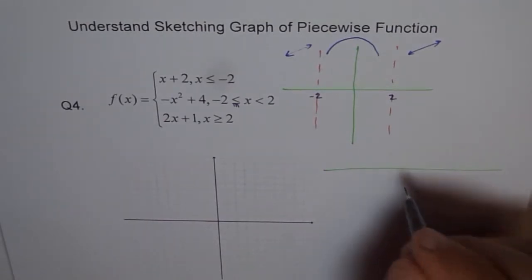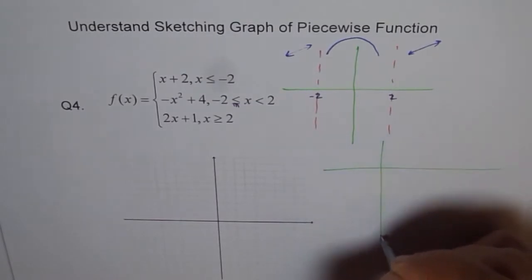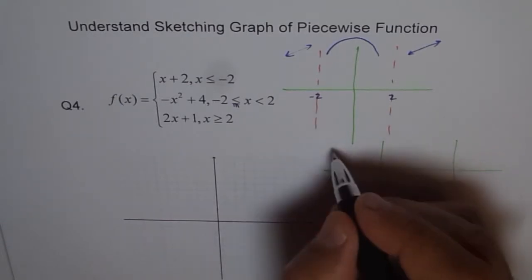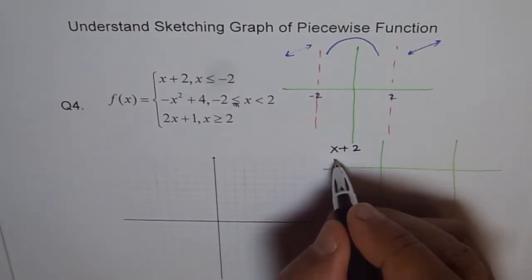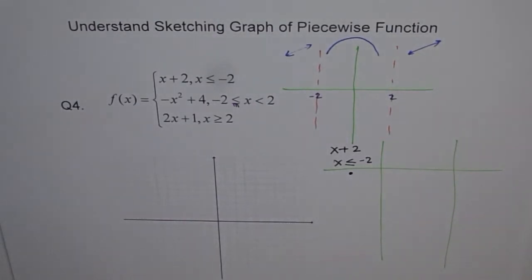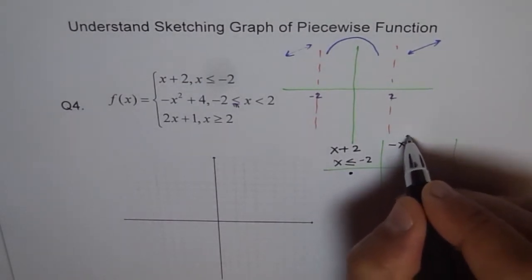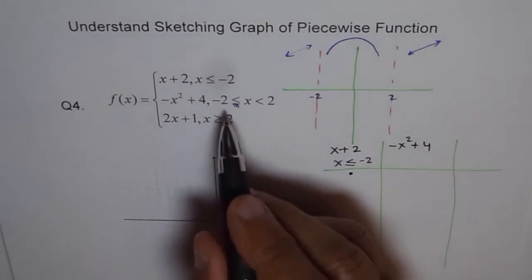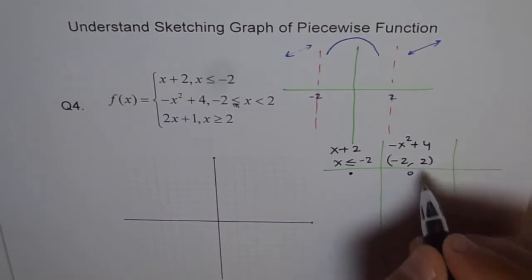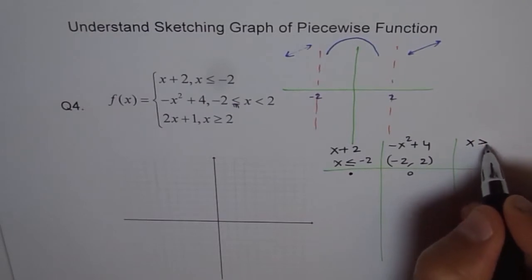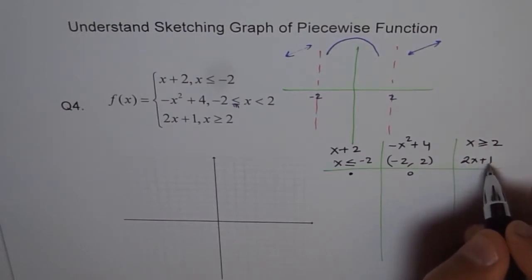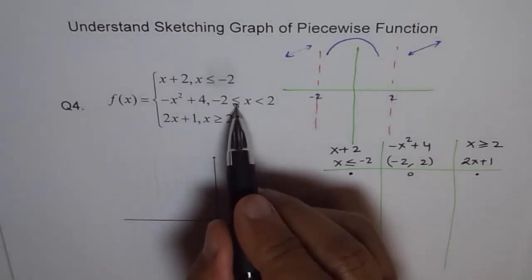Let's make a table of values split into three parts. The first piece is x plus 2, where x is less than or equal to minus 2 — that starting point is filled in. The second piece is minus x squared plus 4, where x is between minus 2 and 2 — the starting point here is not filled in. The third piece is 2x plus 1, where x is greater than or equal to 2 — also filled in.